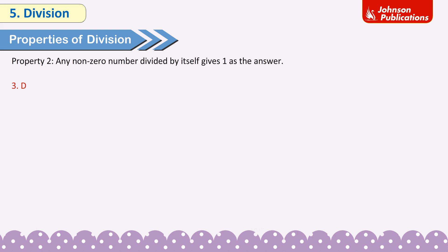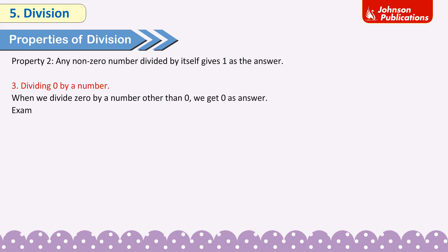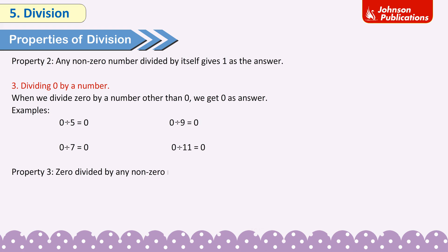Property 3: Dividing 0 by a number. When we divide 0 by a number other than 0, we get 0 as the answer. Examples: 0 ÷ 5 = 0; 0 ÷ 7 = 0; 0 ÷ 9 = 0; 0 ÷ 11 = 0. Zero divided by any non-zero number gives 0 as the answer.